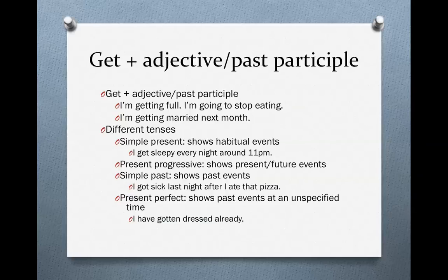You can also use the present perfect. The present perfect talks about past events that happened at an unspecified time. For example: "I have gotten dressed already." I didn't say when I got dressed — I just said I have gotten dressed already. Dressed is a past participle, but we're using it as an adjective, so we use the verb get with it.